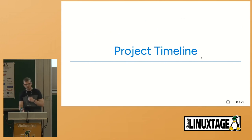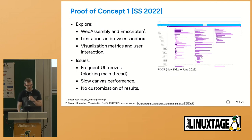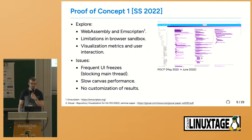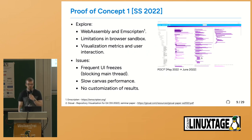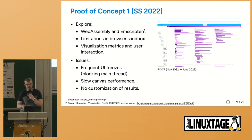It all started back in 2022 when we took a course where we were tasked to implement CSoft as a proof of concept inside the browser sandbox. We used WebAssembly and Emscripten, but we quickly ran into performance issues — frequent UI freezes where the main thread would just block the browser and kill the application. After about one and a half months we had a proof of concept showing it was indeed possible; we just needed to improve performance.